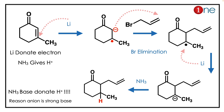Then the radical is still present. Again, electron donation leads to anion formation. The anion is then quenched by ammonia. Finally, you have the reduced alkene. Lithium donates the electron because it is electron rich. Similarly, ammonia gives H⁺.